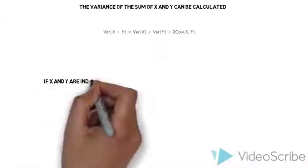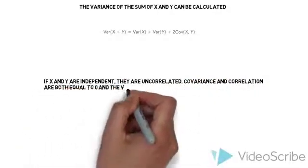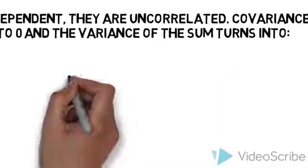In the case that X and Y are independent of each other, they are uncorrelated, and the new equation drops the covariance term.